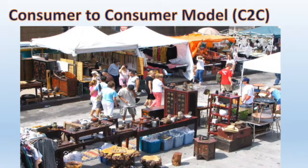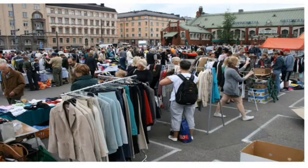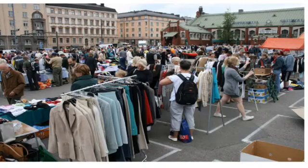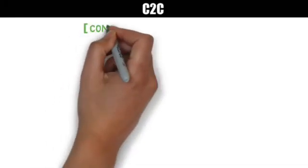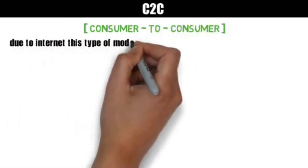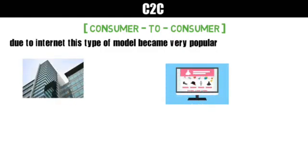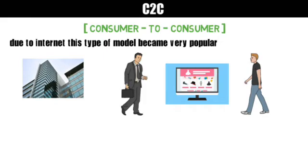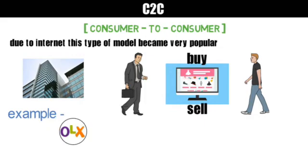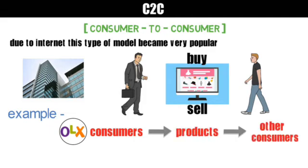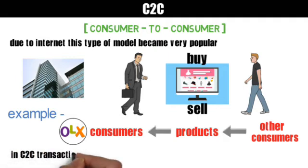The next business model is consumer to consumer (C2C). This is actually an old business model that existed before the internet — people would participate in C2C commerce at a flea market, which is a place where people sell second-hand items, antiques, etc. This model has become more popular in the internet era. A company provides a common platform in the form of a website or portal where individuals can buy or sell products owned by them. In C2C, transactions of products occur between two consumers.